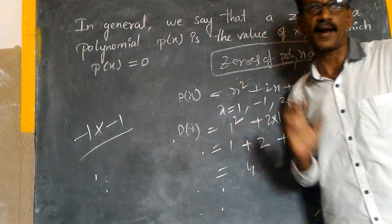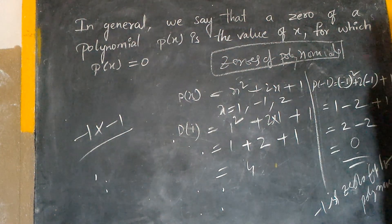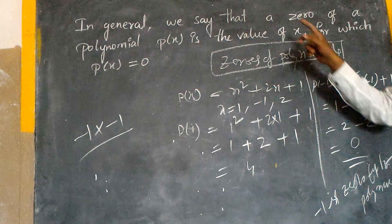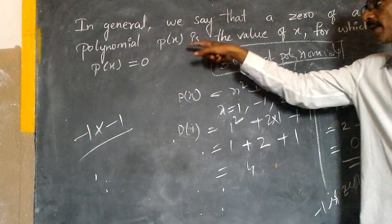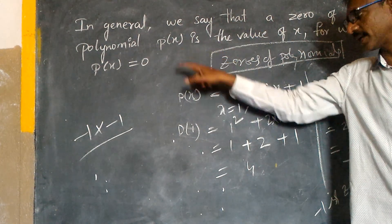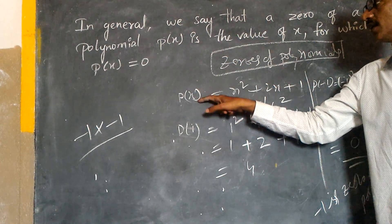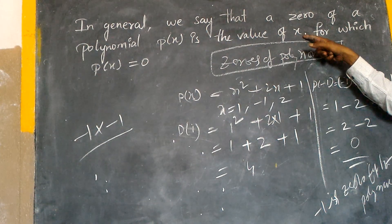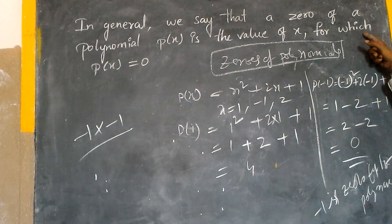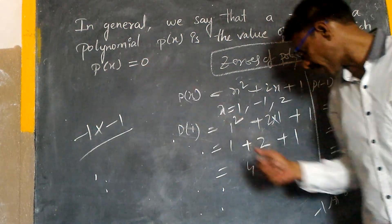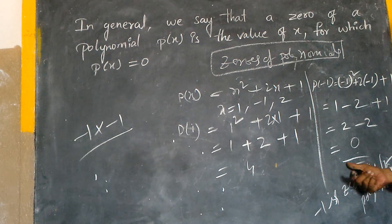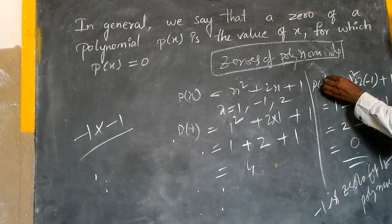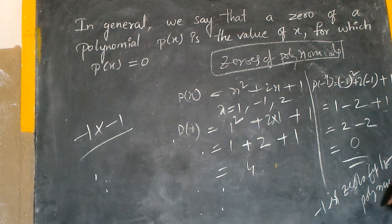In general, we say that the zero of the polynomial p of x is the value of x for which p of x is equal to zero.